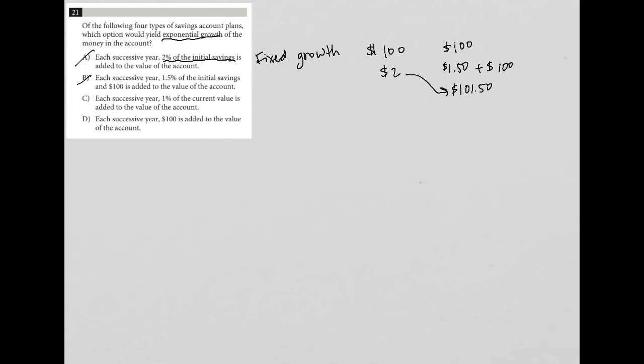Choice C, each successive year, 1% of the current value is added to the value of the account. So now we're dealing with something that's no longer fixed because it's the current value. So if you started off with $100, the next year, if you added 1%, it would be $101. But the next year, you added $1. But the next year, if you added 1%, you'd be at $101.10.